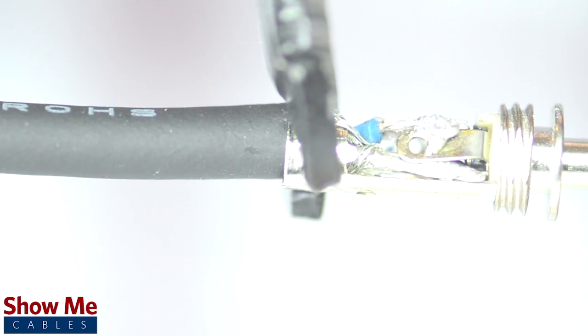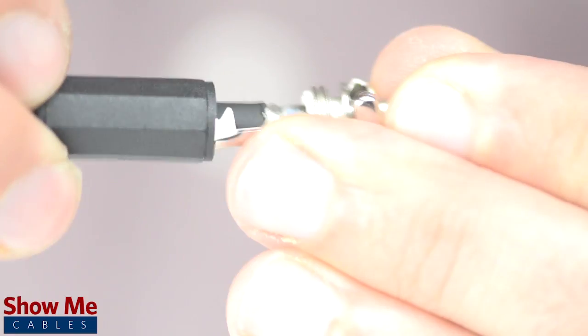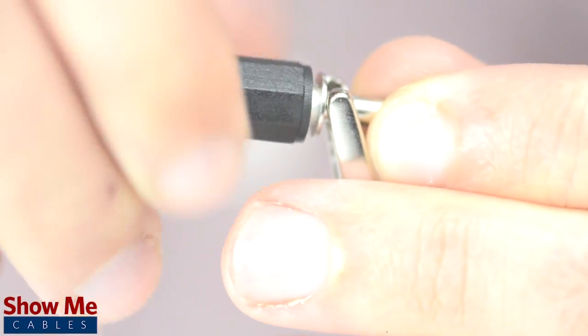Using pliers, pinch the strain relief onto the outside jacket. Slide up the strain relief and tighten onto the connector.